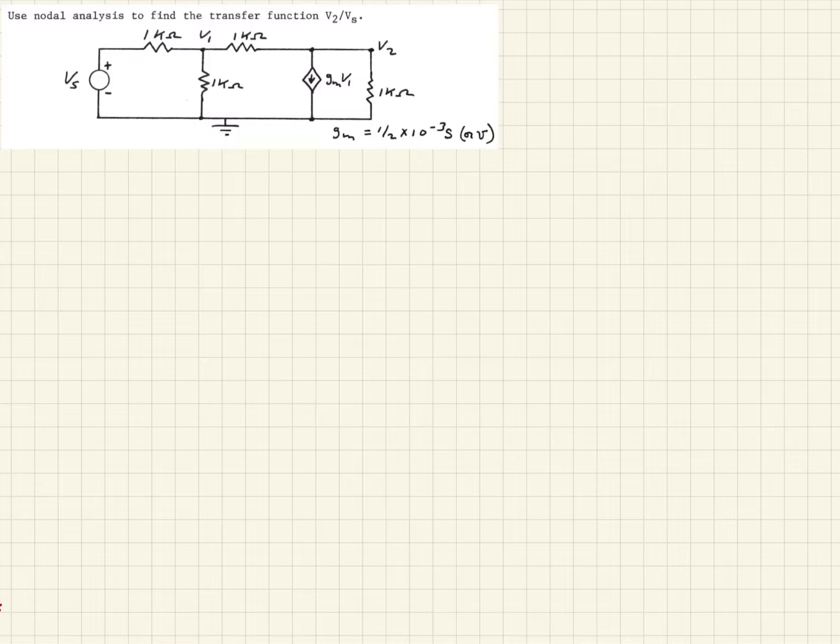Here's an example where they're asking us to find the transfer function V2 over Vs. Here is V2 and here is Vs, so we're trying to find the ratio between those two. It would be kind of like if you had output terminals here, what would be the output voltage given that voltage supply?